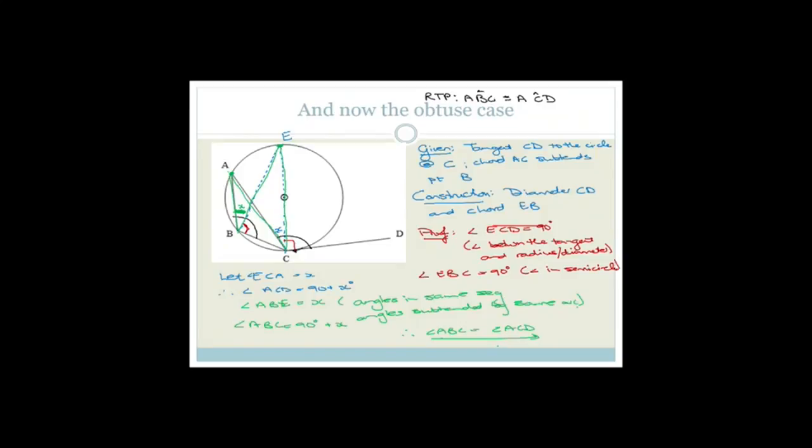What we will do tomorrow is use these two proofs as well as the fact that the tangent makes a 90-degree angle with the diameter, in a whole bunch of other examples, before we move on to the next theorem. Have a great day. Bye.